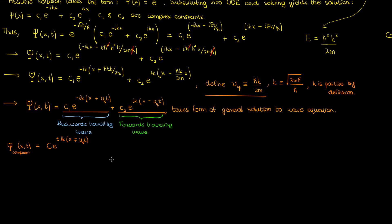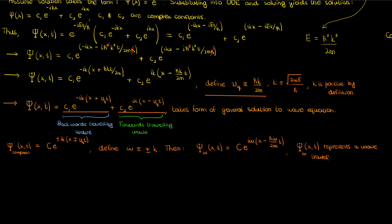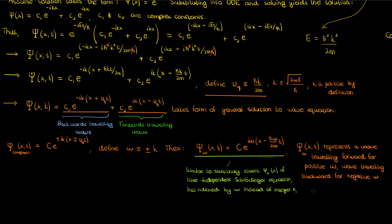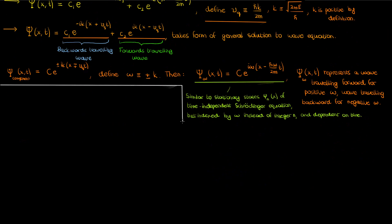To simplify notation, I can define another constant omega as plus or minus k. When I expand out v sub q, I get a component solution Psi sub omega that represents a wave traveling forward if omega is positive and a wave traveling backward if omega is negative. This capital Psi omega is analogous to the stationary states of the time-independent Schrödinger equation, Psi sub n, which we found in previous videos like the particle in a box. The main difference is that those stationary states are indexed by an integer n, whereas capital Psi omega is indexed by a continuous real number omega. Also, those stationary states are stationary — not dependent on time — whereas capital Psi omega here does depend on time.